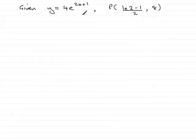Now we've got the curve y equals 4e to the 2x plus 1 and the point P, and what we've got to do is find the equation of tangent at the point P on this curve.